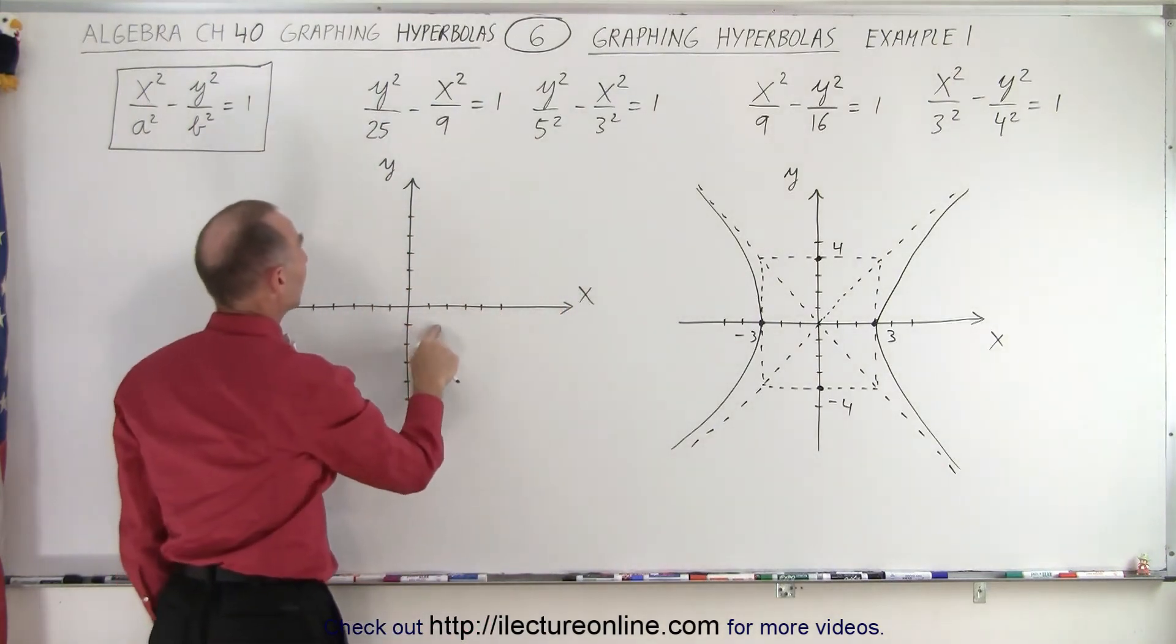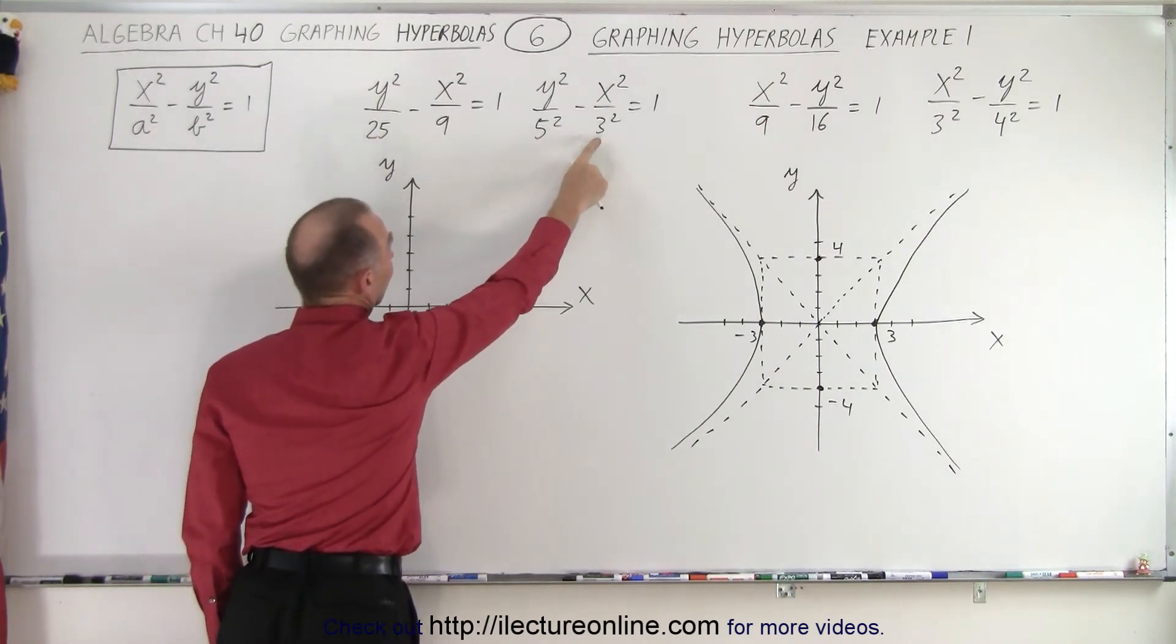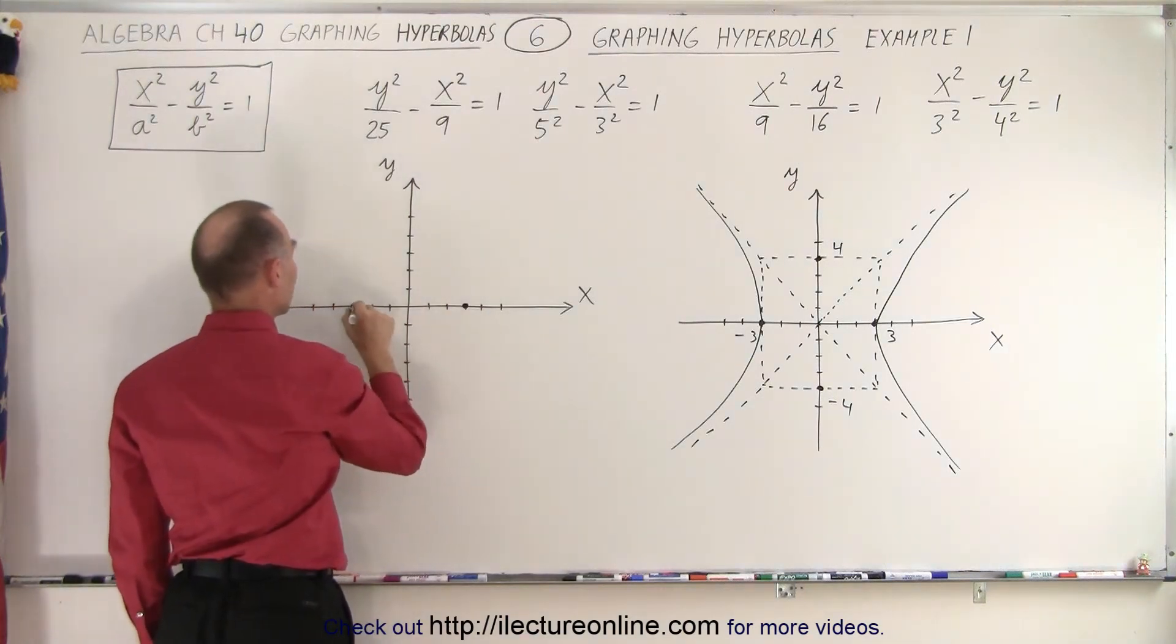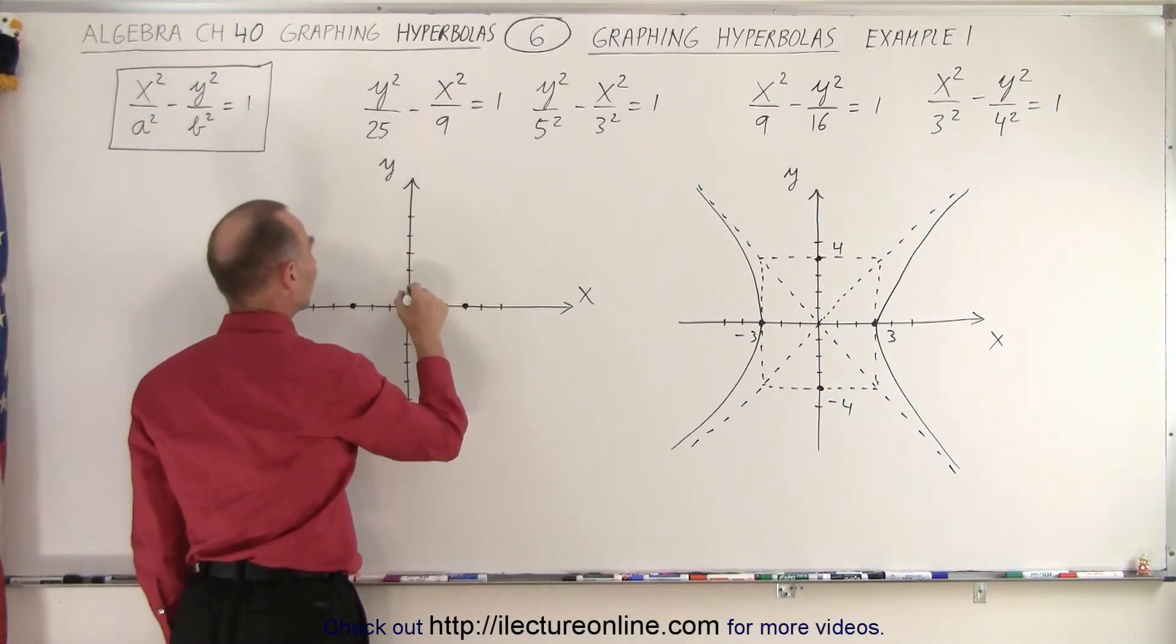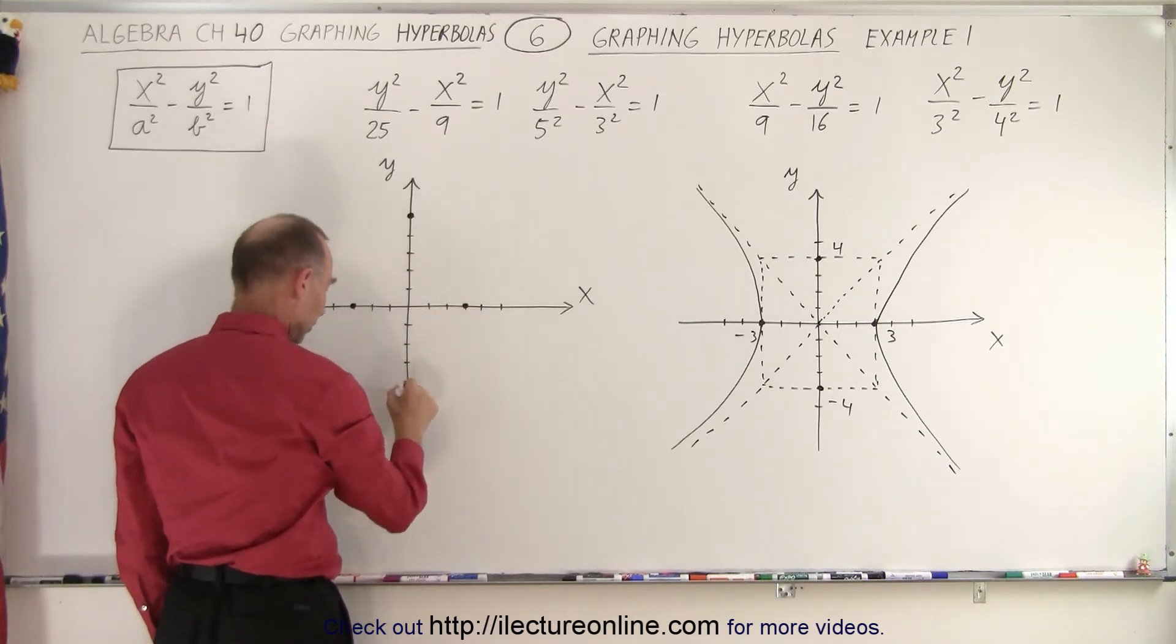We do the same over here. We find, in this case, remember that this is b and this is a. So in the a direction we go plus 3 and minus 3. In the b direction we go plus 5: 1, 2, 3, 4, 5. And minus 5: 1, 2, 3, 4, 5.